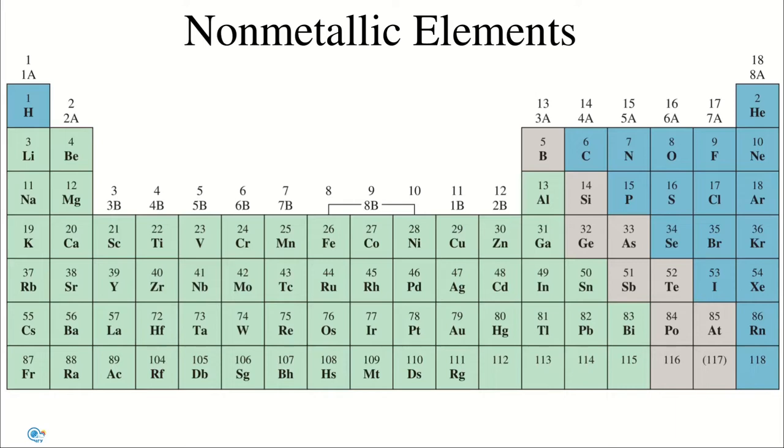Let's talk about general properties of non-metals. Properties of non-metals are more variable than those of metals. A number of non-metals are gases in the elemental state: hydrogen, oxygen, nitrogen, fluorine, chlorine, and noble gases. Only one, bromine, is a liquid. All the remaining non-metals are solid at room temperature.